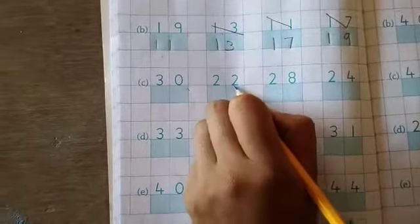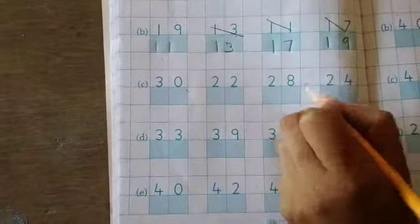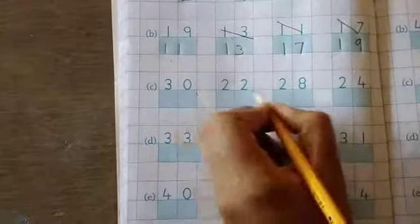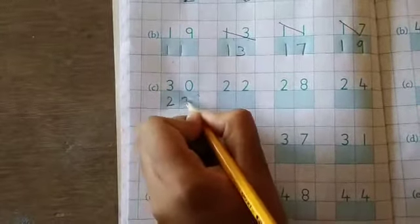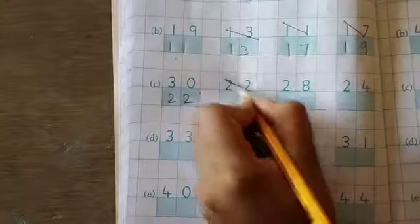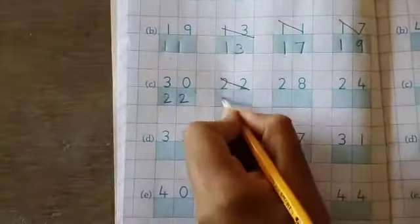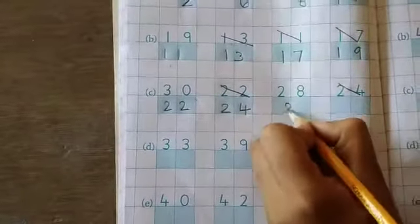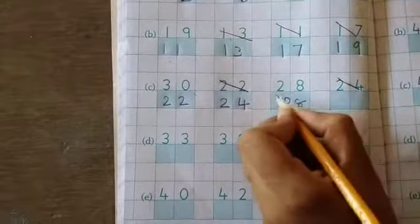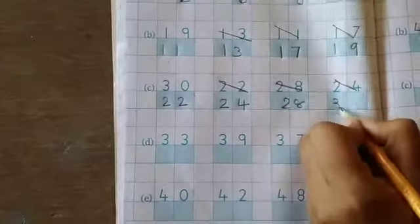30, 22, 28, 24. So we use 22. Then 24. Then 28. Then 30.